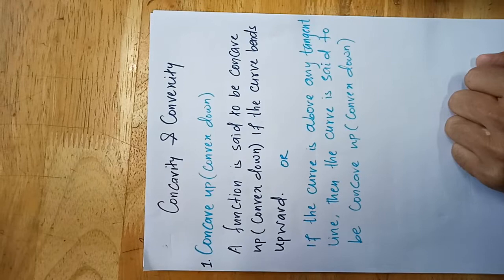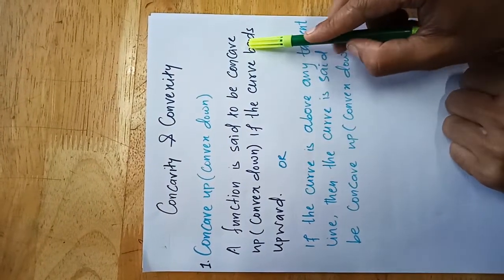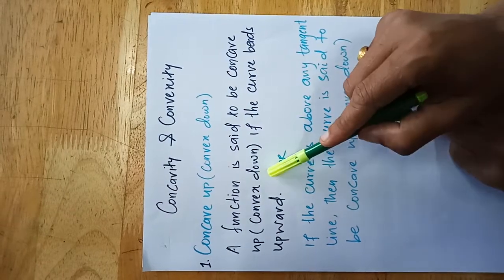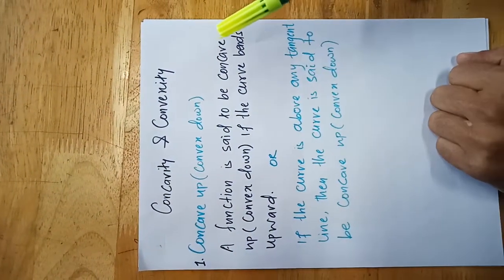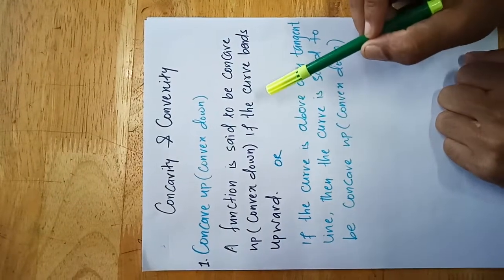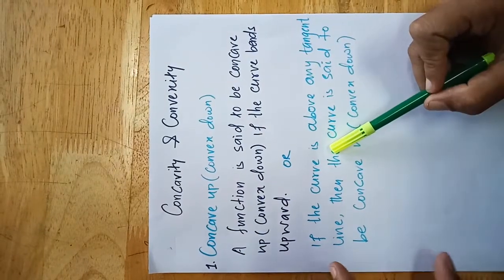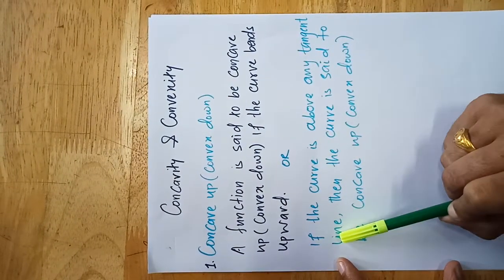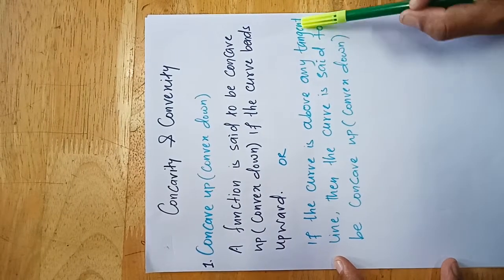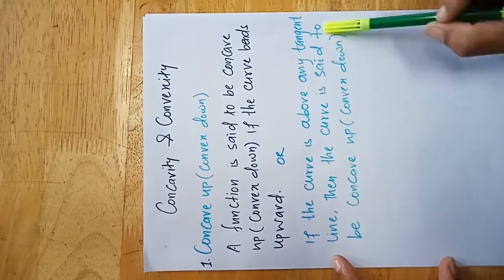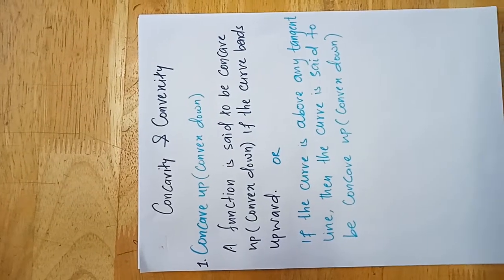Concave up is also called convex down. A function is said to be concave up or convex down if the curve bends upward. If the curve is bending upward, it's called concave up. We can also redefine this as: if the curve lies above any tangent line, then the curve is said to be concave up.